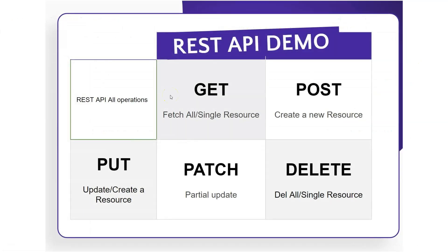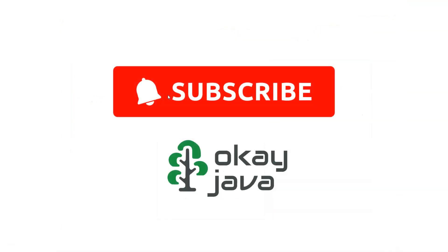In this video we discussed the GET function to fetch a single resource or all resources, the POST call to add a resource, PUT to update an existing resource or create a new one if it doesn't exist, PATCH to partially update a resource without passing the entire object, and DELETE to delete a single resource or all resources from the database. Thank you for watching.